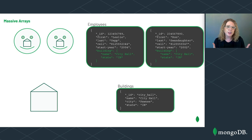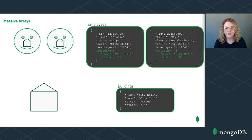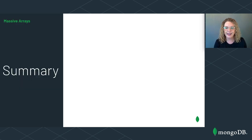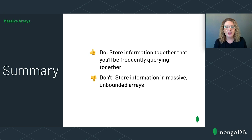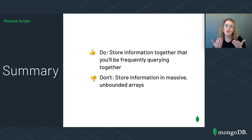Those are a few different options for modeling employee and building data to avoid massive arrays. To determine which model is best, we really need to understand how the data will be used. To summarize the massive arrays anti-pattern: do store information together that you'll be frequently querying together — data that is accessed together should be stored together. Don't store information in massive unbounded arrays that will continue to grow over time. Carefully consider your use case to determine what schema design is best for you.